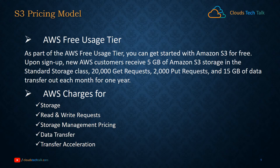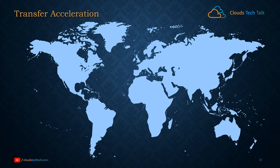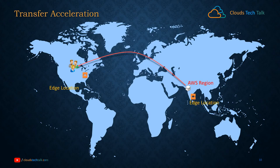Let's understand transfer acceleration. For example, let's assume a file is stored in an S3 bucket located in the India Mumbai region. Now users from the US want to access that particular file. In normal circumstances, the file would be transferred via the public internet, where bandwidth is limited and there will be noticeable latency, making it slower. However, AWS has different edge locations across the world — currently more than hundreds of edge locations worldwide.